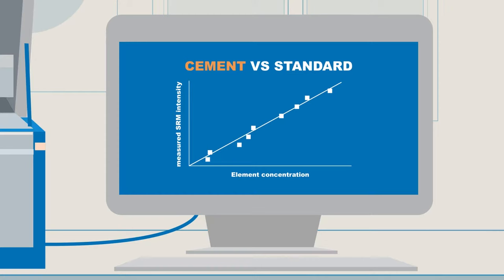When an unknown cement sample is measured, the intensity is compared to the calibration curve of the standard. This sort of calibration can be set up for a wide variety of materials like petroleum, polymers, metals, and so on.